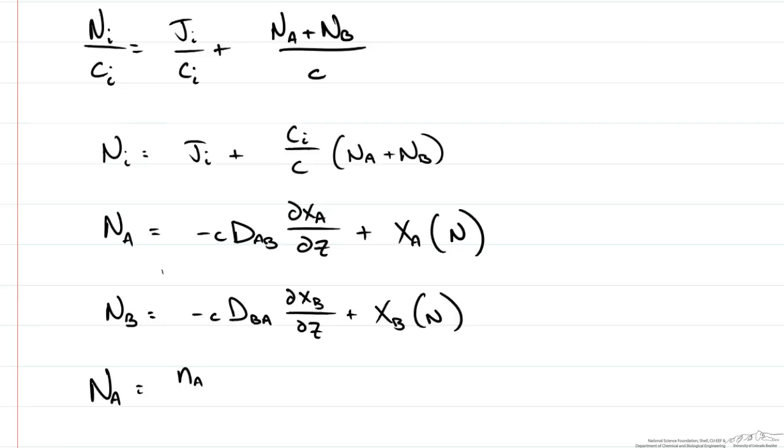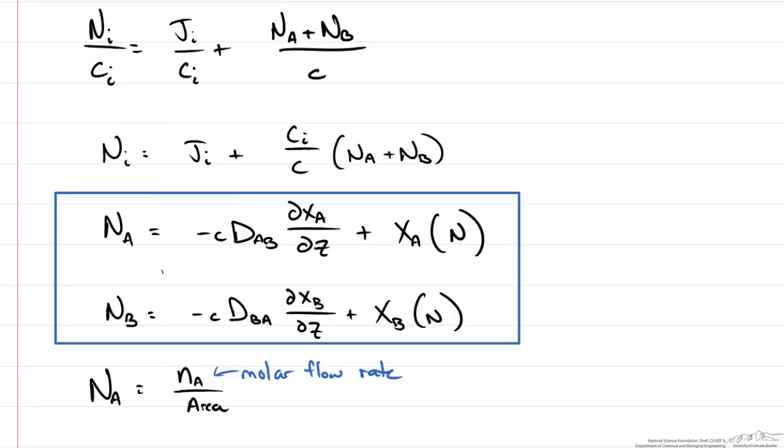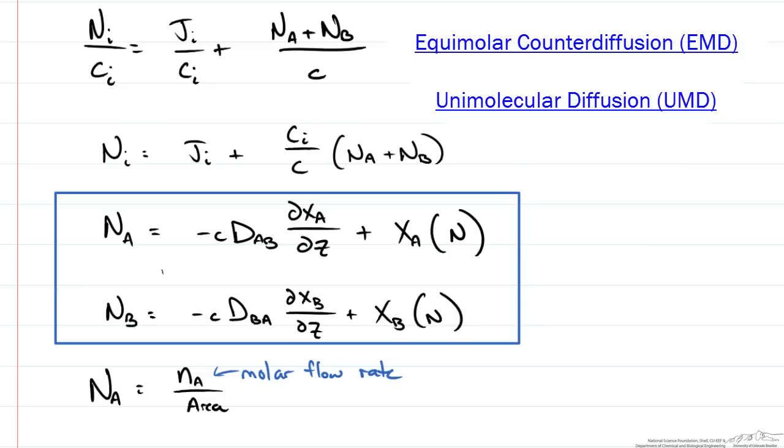So these two equations become pretty important when we start looking at characterizing mass transfer. And there is a couple of specific cases that we are going to start with. That of unimolecular diffusion and equal molar counter diffusion. And those are things we can find in other screencasts.